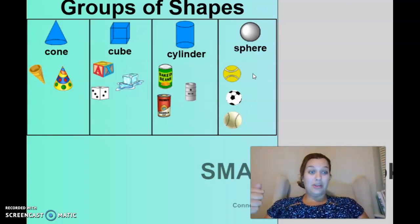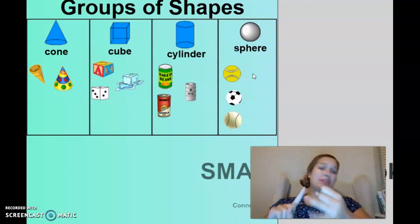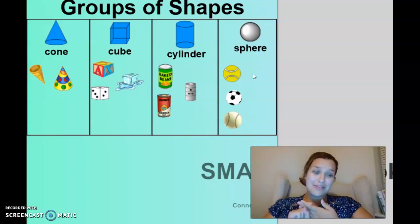So, your goal today... There is a Google Form for an exit ticket. But the last question on your Google Form will say, take a picture of what you found, what 3D shapes you found around the house. And I want you to show me every 3D shape you found around the house. I want to see the cones, the cubes, the cylinders, and the spheres.